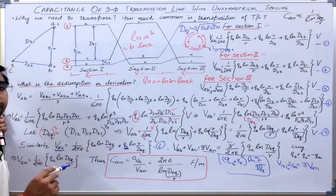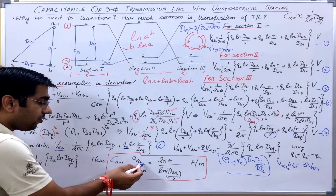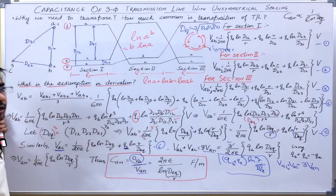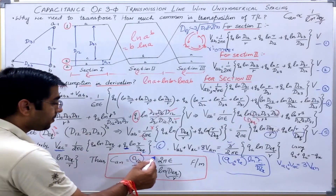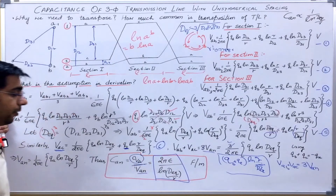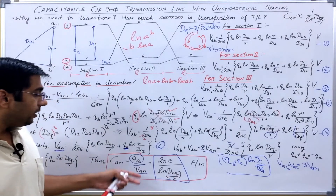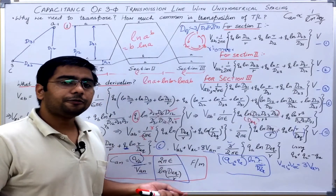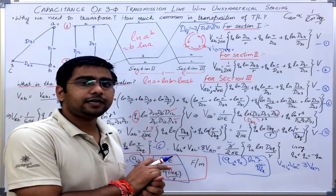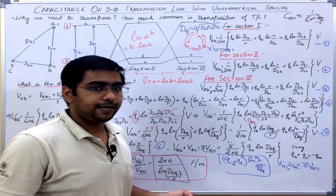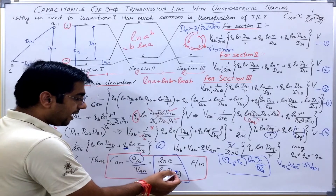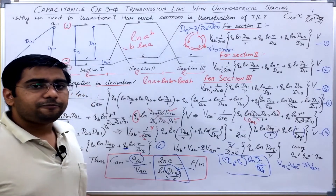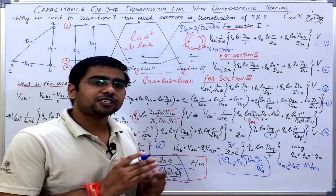Writing the expression for capacitance — charge on conductor A per unit length divided by the potential difference between that phase and neutral — the expression comes out to be C = 2πε / ln(D_eq/R). We see that this expression remains similar in form to the case where the transmission line was symmetrically spaced. The difference is that D has been replaced with D_equivalent.